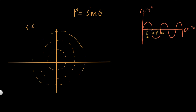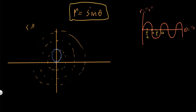Now that we know how the radius of this polar function reacts depending on the angle, we can graph it much more easily. At zero the radius is zero, then it starts growing up until pi over 2, so it should look like that. The maximum is one, so we stop there. The radius grows up to pi over 2, then starts decreasing again back to zero at pi.